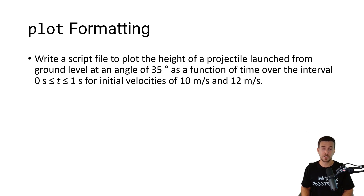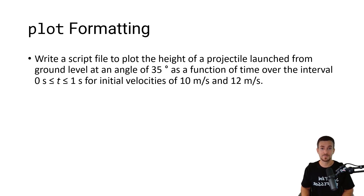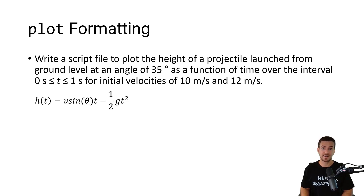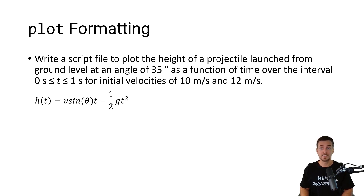In this video we're going to write a script file to plot the height of a projectile launched from ground level at an angle of 35 degrees as a function of time over the interval 0 ≤ t ≤ 1 second for initial velocities of 10 and 12 meters per second. The height of the projectile as a function of time is equal to the initial velocity multiplied by the sine of the launch angle times time minus one-half times gravity times the time squared.